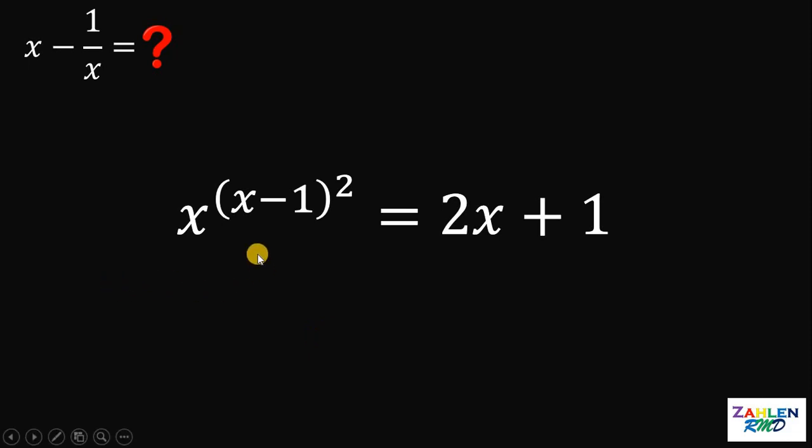First is we need to let this x minus 1 to another variable and let's call this as a. So, we know that a must be equal to x minus 1. And then, let's solve for the value of x in terms of a. So, x must be equal to a plus 1.